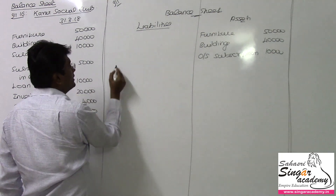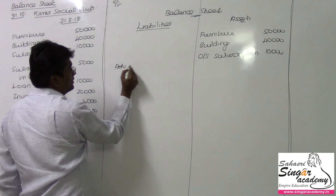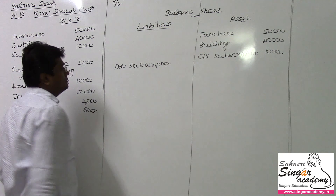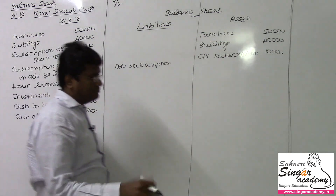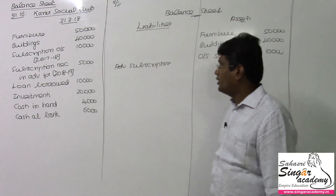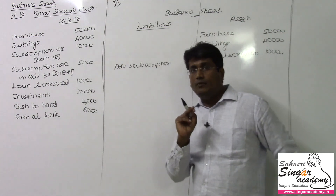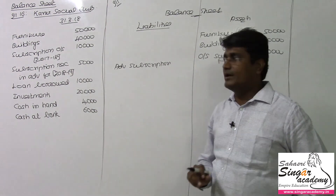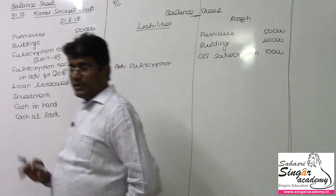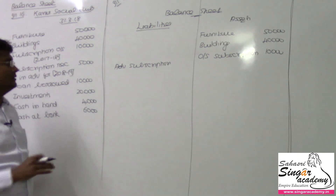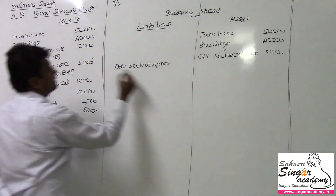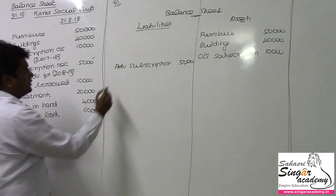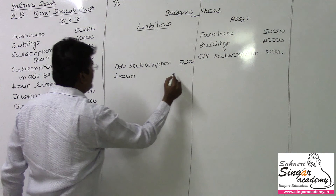Subscription received in advance — I am liable for that, so it goes on the liabilities side. The correct term is 'subscription received in advance,' though we commonly say 'advance subscription.' Subscription in advance is actually different from advance subscription, but we won't go into grammar detail. The value is 5,000 rupees. Loan borrowed goes on the liabilities side: 10,000 rupees.